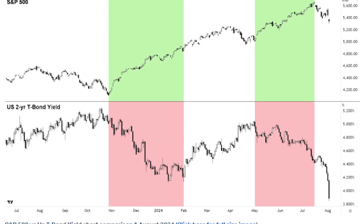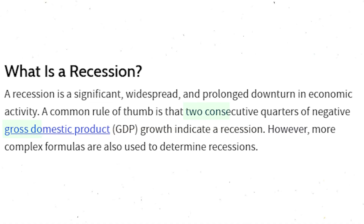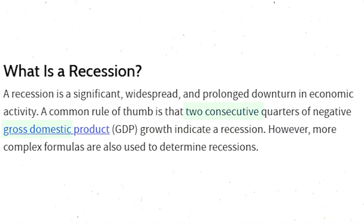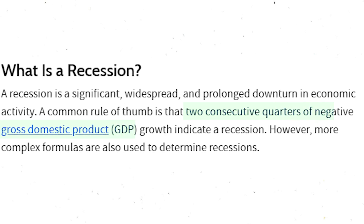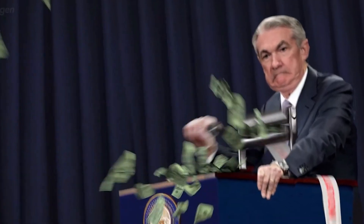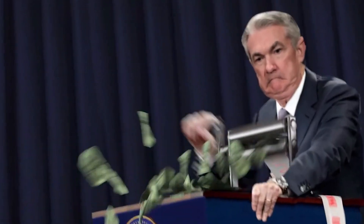Every country has a different way to explain what a recession means, and they have different indicators to show when their economy is actually in a recession. For a lot of countries, it is two consecutive quarters of negative GDP growth, but sometimes this isn't always the case. There are also a lot of other factors, along with inflation and other indicators as well.